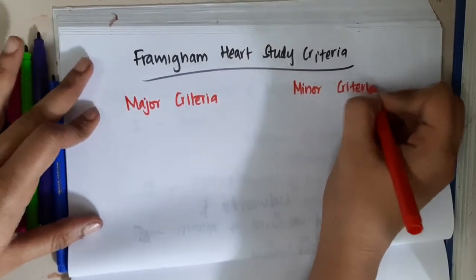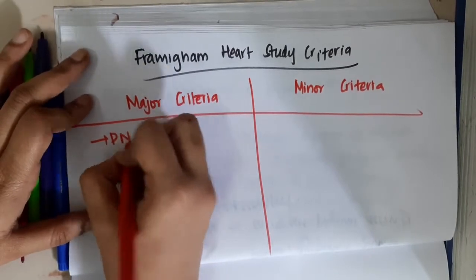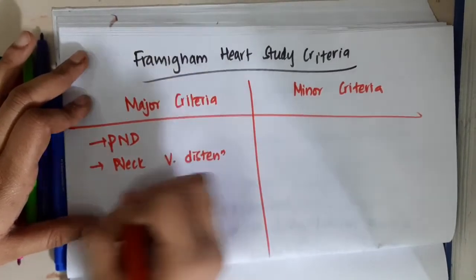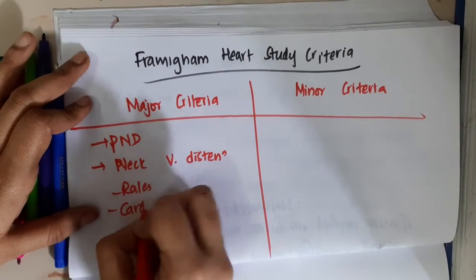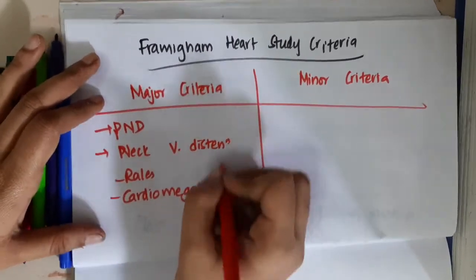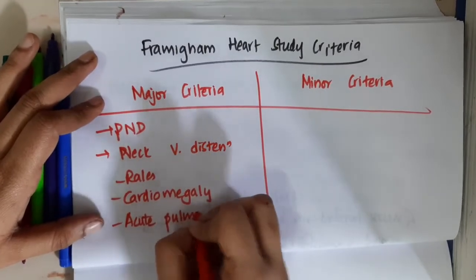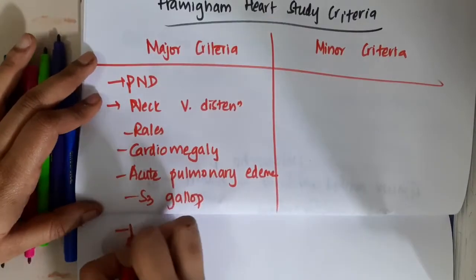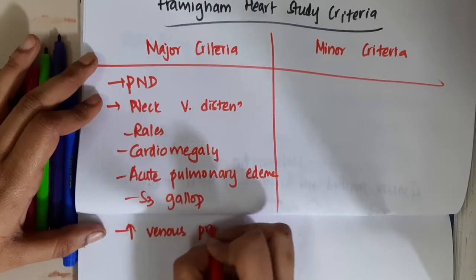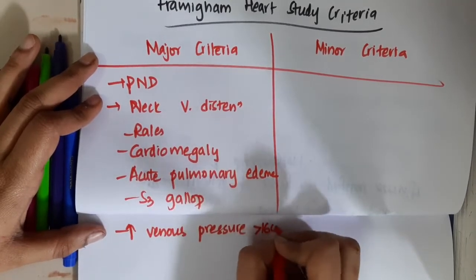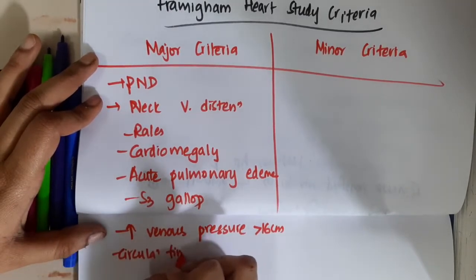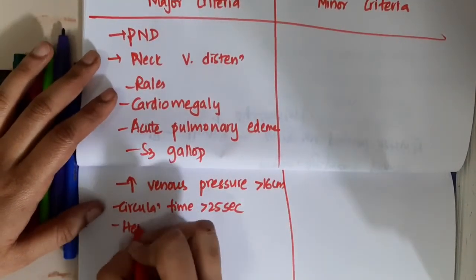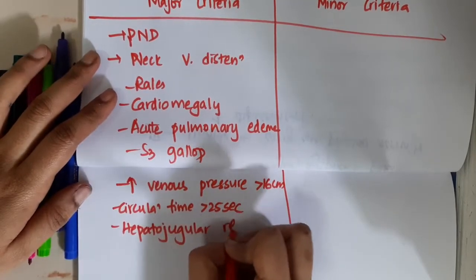The major criteria include paroxysmal nocturnal dyspnea (PND), neck vein distension, rales, cardiomegaly, acute pulmonary edema, S3 gallop, increased venous pressure more than 16 cm, and circulation time of more than 25 seconds.